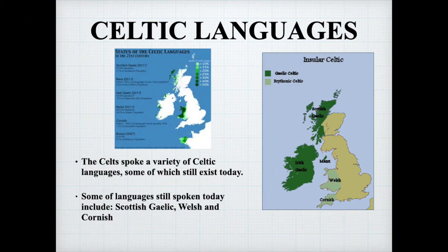First of all, let's look at some other native languages that exist in the UK. Over 2000 years ago, different groups of tribes collectively known as the Celts, the Celtic peoples, lived in the British Isles — which is now the United Kingdom and Ireland — and in some parts of France as well. They spoke different languages, some of which still exist today, for example in Scotland: Scottish Gaelic; in Wales: Welsh; in the south west of England: Cornish; and also in Ireland, the Republic of Ireland: Irish Gaelic.